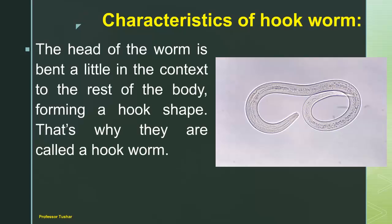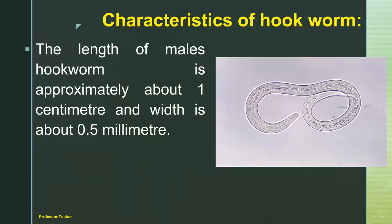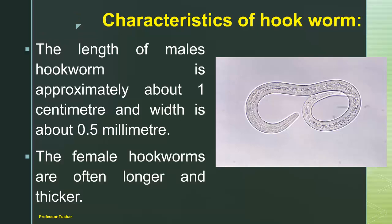Characteristics of hookworm. The head of the worm is bent a little in contrast to the rest of the body, forming a hook shape — that's why they are called hookworms. They have two pairs of teeth in their mouth. The length of a male hookworm is approximately 1 cm and width is about 0.5 mm. The female hookworms are often longer and thicker.